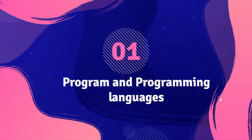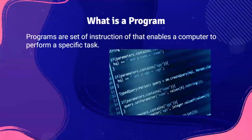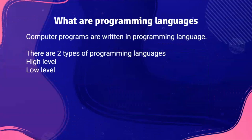First up, we have programs and programming languages. What is a program? Programs are a set of instructions that enable a computer to perform a specific task. Computer programs are written in programming languages. As we learned earlier, computers only understand low level languages, that is machine code.